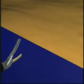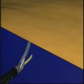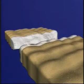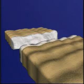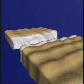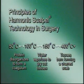The harmonic scalpel cuts and coagulates tissue simultaneously. The coagulation effect occurs through the transfer of mechanical energy to the tissue. Internal cellular friction breaks hydrogen bonds, resulting in protein denaturation. As the proteins are denatured, a sticky coagulum forms and seals the small vessels at a temperature under 100 degrees Celsius, minimizing smoke.